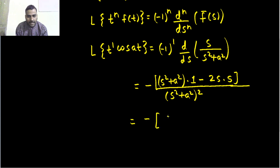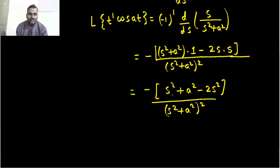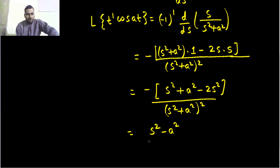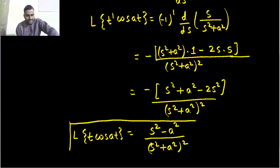Now let's simplify. We are getting (s²+a²) minus 2s², all over (s²+a²)². So we get minus of (s²+a² − 2s²) over (s²+a²)². When that minus goes inside, s² becomes positive and a² becomes negative. So the Laplace transform of t·cos(at) is s²−a² divided by (s²+a²)².